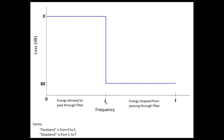At that point, no energy is going to pass through. From frequency F-naught all the way out to F, that is the stop band — the band of frequencies where the energy is stopped from going through the filter. This is an ideal low-pass filter.